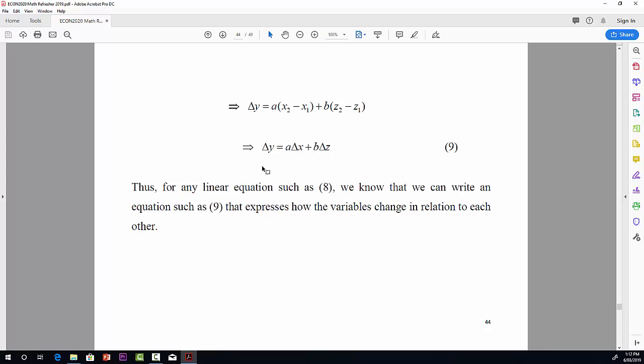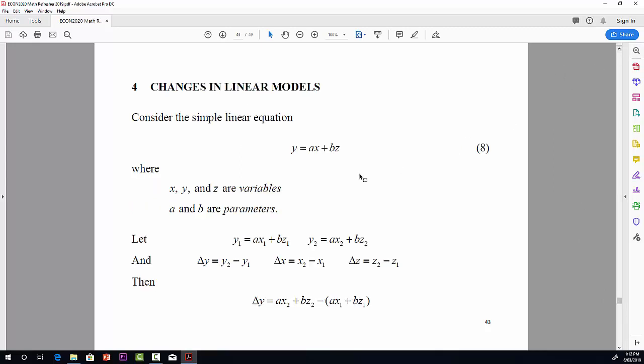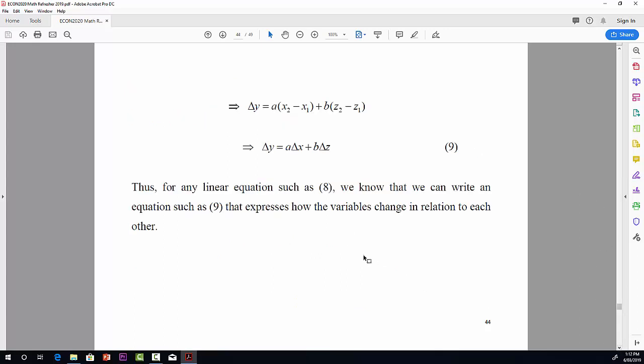So, knowing this, what we can do is for any linear equation, like equation 8 above, just take a look at equation 8 again. If you have an equation like this, y is equal to ax plus bz for any parameters a and b and any variables x and y, then you can jump immediately to equation 9 that says change in y is equal to a times change in x plus b times change in z. So, this is the sort of technique we'll actually use again and again throughout this course, particularly when we're looking at policy changes and the impact that they have on output and other macro variables.